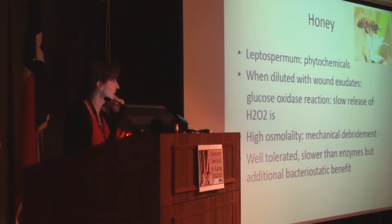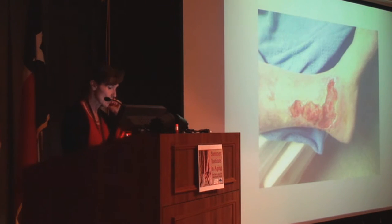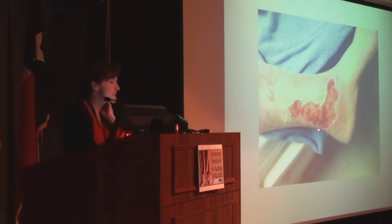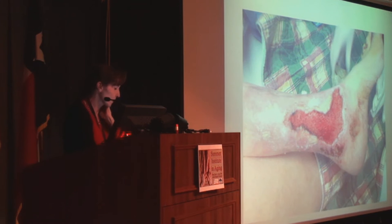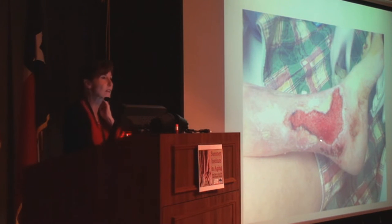Here's a full thickness venous stasis ulcer in the gaiter area over the malleolus with irregular borders, fibrinous debris and slough — not the healthiest looking wound with no signs of infection. After a couple of weeks of honey, you get a very nice granular base. The wound hasn't decreased dramatically in size, but the wound bed is now healthy and we can try to get it to move forward. That would be considered a type of chemical debridement.